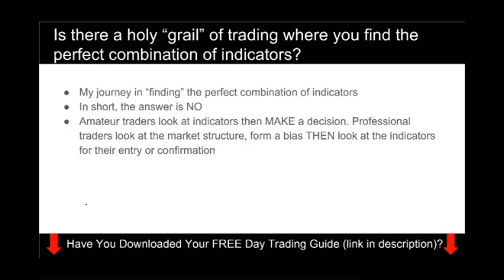Do not keep trying different indicators until you find the perfect combination — do not waste your time. I've observed that new traders and struggling traders always look at indicators first, then make a decision. They say things like, 'the RSI is up, the moving average is up, so I buy.' Professionals on the other hand look at market structure first from a trading bias, then look at trading indicators at the end of their process. They already have their direction, then they look at the indicators — versus amateur traders who only look at indicators because it's easy to just slap one on and buy. Please always remember: market structure comes first, then you look at indicators as the last step.